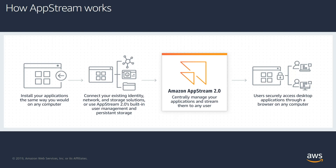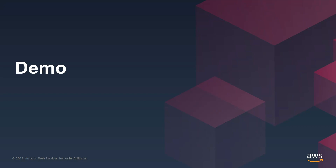How does AppStream work? The service is called AppStream, and you install applications the same way you would on any computer — you install them on an image and build an image of the application. You can integrate your existing identity, network, and storage solutions. For example, if you have Active Directory, you can integrate user authentication with it. AppStream then streams that application out to users, and they can access it through a browser on any computer.